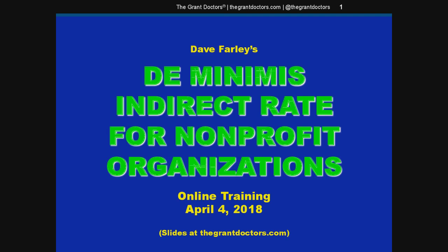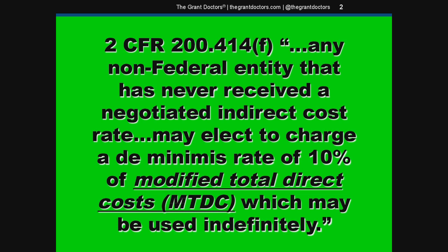Hey everybody, welcome to the presentation. Today I want to show you how your nonprofit organization can easily capture administrative costs or indirect from your federal grants. A cool new feature in the uniform guidance allows nonprofit organizations that have never had a negotiated indirect rate with the federal government to use the de minimis rate of 10% of your grant's modified total direct costs to recover indirect expenses.